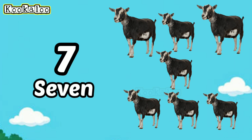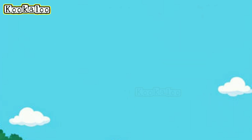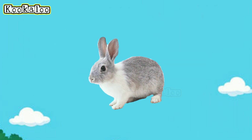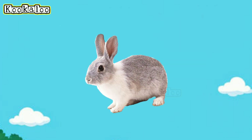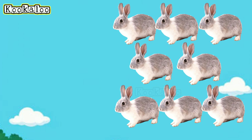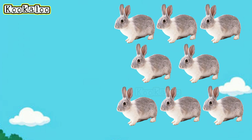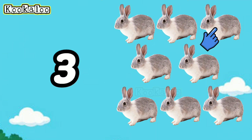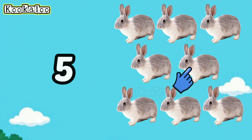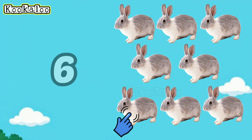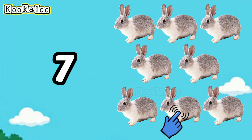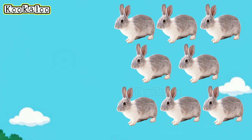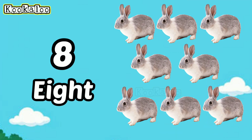And the next animal is a rabbit. How many rabbits can you see? One... Two... Three... Four... Five... Six... Seven... Eight. There are eight rabbits. Eight rabbits.